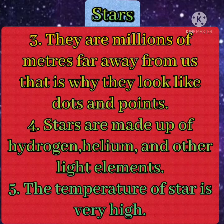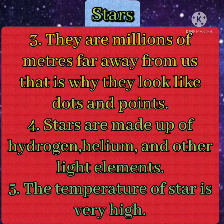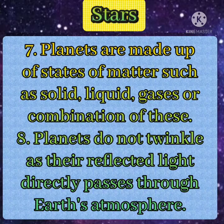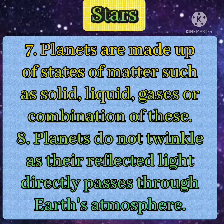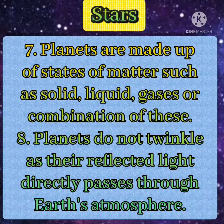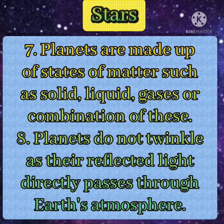Eighth, stars appear to twinkle due to constant refraction of light in Earth's atmosphere. In contrast, planets are closer to Earth and light reflected from them passes directly through Earth's atmosphere without any bending, so they do not twinkle. Ninth, stars are made of hydrogen, helium, and other light elements, whereas planets are made up of states of matter such as solid, liquid, gases, or a combination of these.